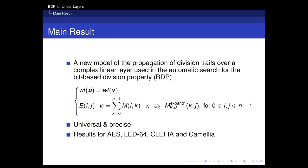When we use the MILP or SAT tools to describe the propagation of the division trials, we model these constraints into our model. Our new model is universal and precise — it can trace the division trials precisely, and it can be used in almost all cases for all kinds of linear layers. With this new model, we can handle AES, LED, Cliffier, and Chameleon ciphers, which could not be handled well before.